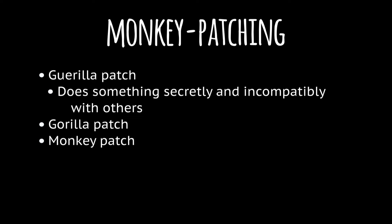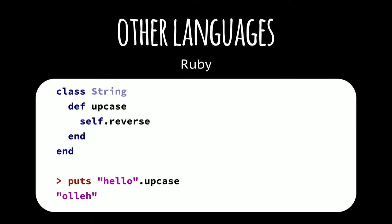As you might notice, all these terms have a rather negative meaning. But despite that, monkey patching exists in a number of other programming languages. For example, in Ruby, you can redefine any method in any class, including standard modules like String or Array. In Ruby it's named 'reopen the class'. In this example, we replace the standard upcase string method with the reverse method. Monkey patching in Ruby is almost part of the language philosophy because there is even a special simple syntax for doing this.